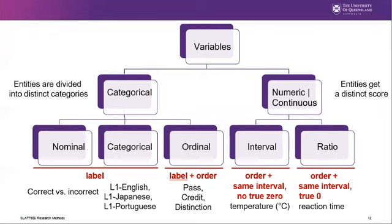Categorical variables mean there's a single variable with more than two categories. So we can recruit participants with native language backgrounds being English, Japanese, Portuguese, etc. We distinguish between different groups based on the label assigned, but not based on order. If I reclassified this variable into English versus all other languages, it would become a nominal variable again. Ordinal variables have a label and a certain order. For example, we can group students based on scores — a passing grade, a credit, and a distinction — where the assumption is that passing is not as good as credit, and credit is not as good as distinction.